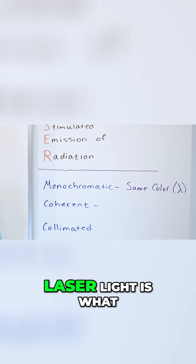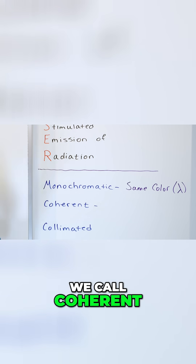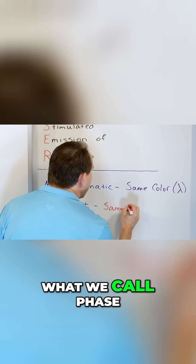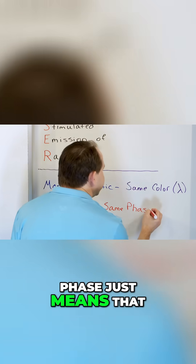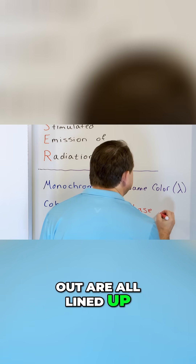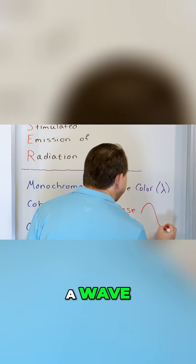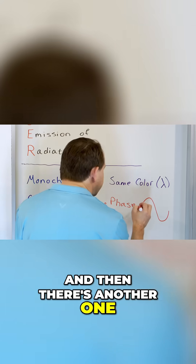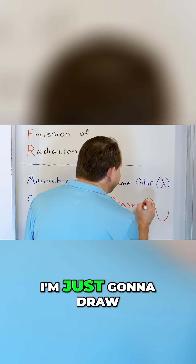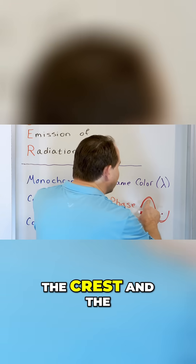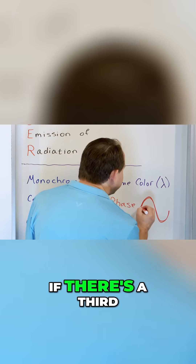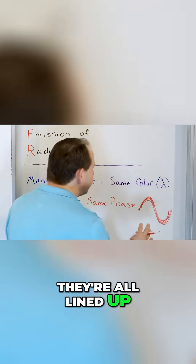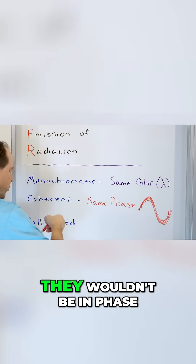The second property is that laser light is what we call coherent. Coherent light means that all of the light waves have the same phase. Phase just means that the waves that come out are all lined up. So here we have a wave like this, that's a photon, and then there's another one traveling with it — I'm just going to draw it right on top because they're lined up. The crests and the troughs are lined up. If there's a third photon, they're all lined up. If they were shifted with respect to one another, they wouldn't be in phase.